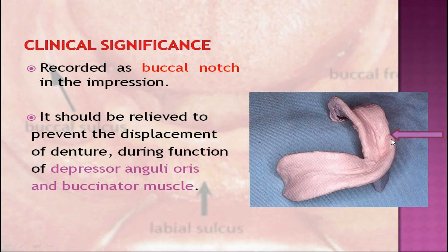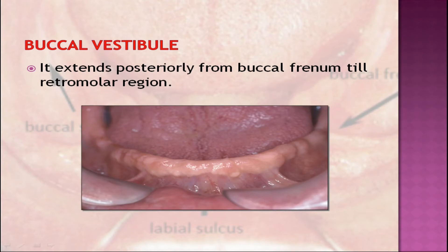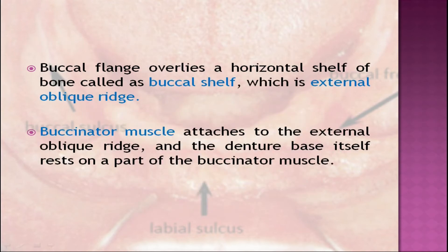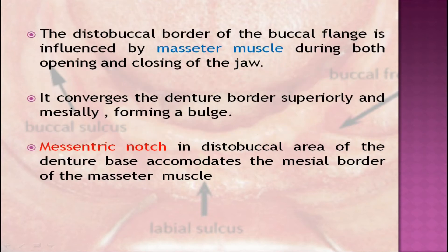It should be relieved to prevent displacement of the denture during function of the depressor anguli oris and buccinator muscle. The buccal vestibule extends posteriorly from the buccal frenum to the retromolar region. The buccal flange overlies a horizontal shelf of bone called the buccal shelf, which is the external oblique ridge. The buccinator muscle attaches to the external oblique ridge and the denture base rests on part of the buccinator muscle. The distobuccal border of the buccal flange is influenced by the masseter muscle during both opening and closing of the jaw.